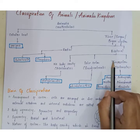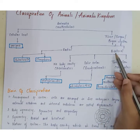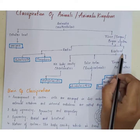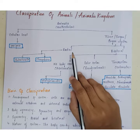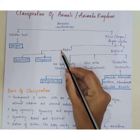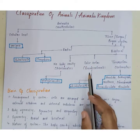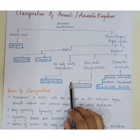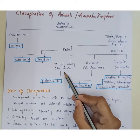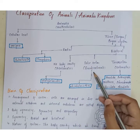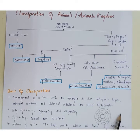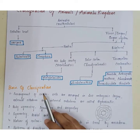In bilateral symmetry, an animal can be divided into two halves in only one plane. In radial symmetry, it can be divided into two equal halves in any plane. Regarding body cavity: animals without a body cavity are called acoelomates; if a false coelom is present, they are called pseudocoelomates; and if a true coelom is present, they are called coelomates.